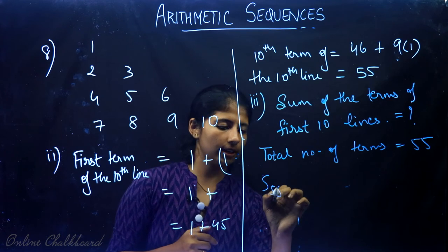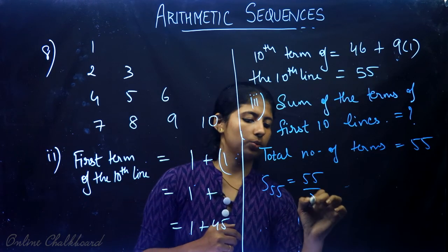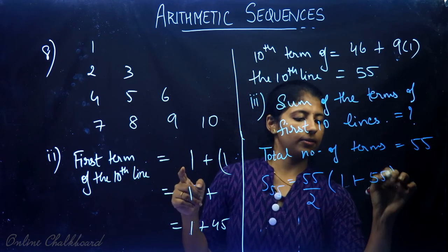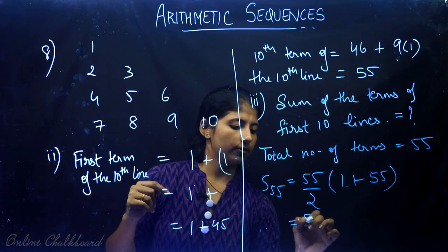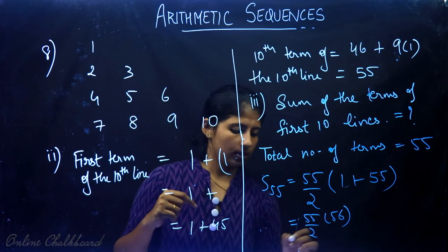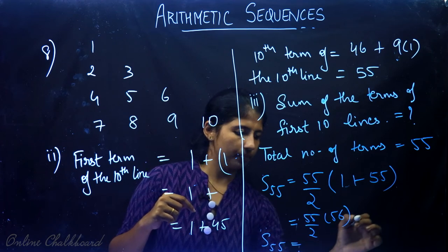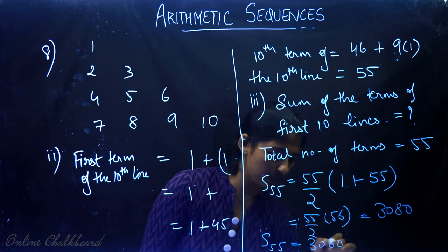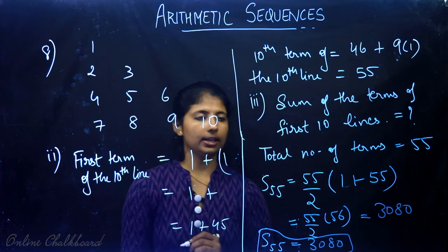S55 equals 55 divided by 2 times (first term plus last term) equals 55 divided by 2 times (1 plus 55) equals 55 divided by 2 times 56 equals 55 times 28 equals 3080. So S55 equals 3080.